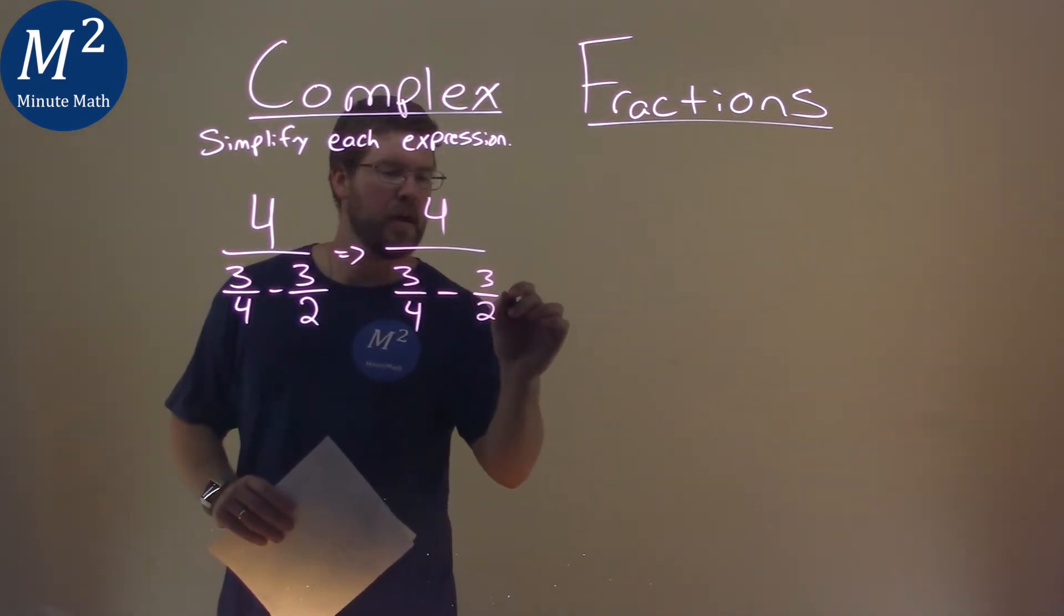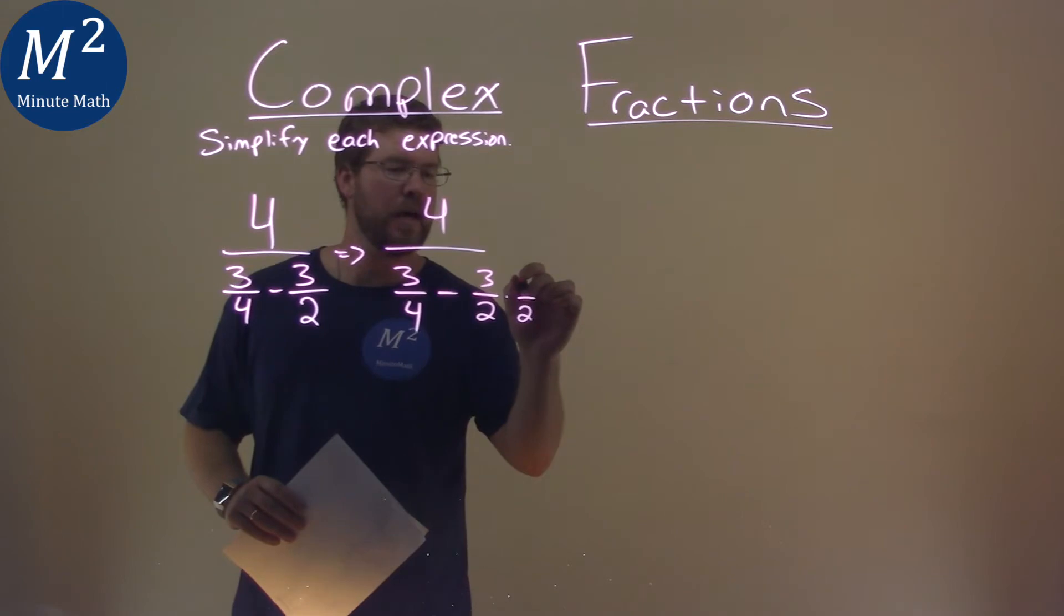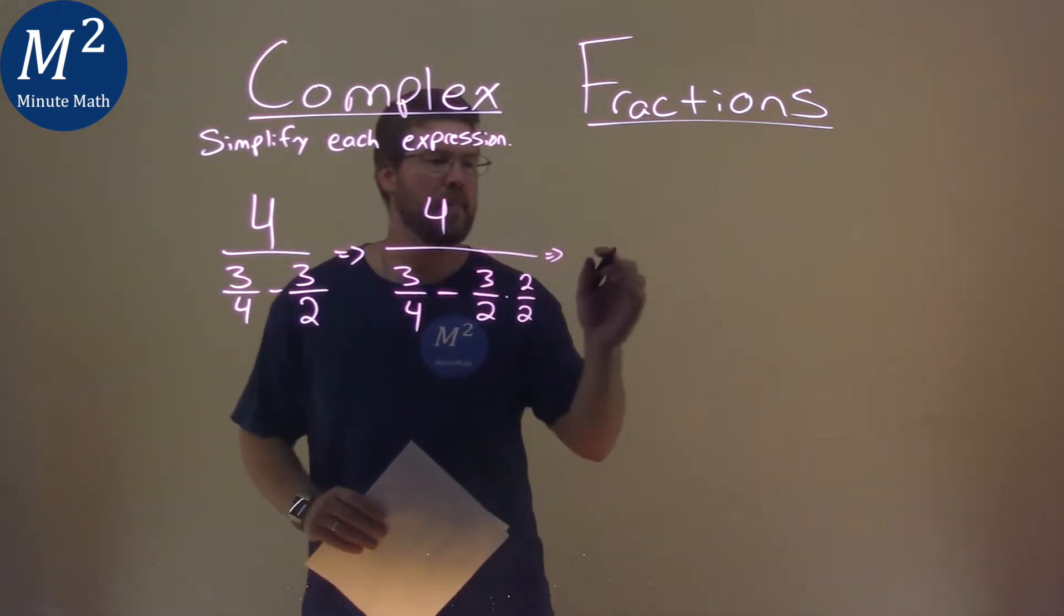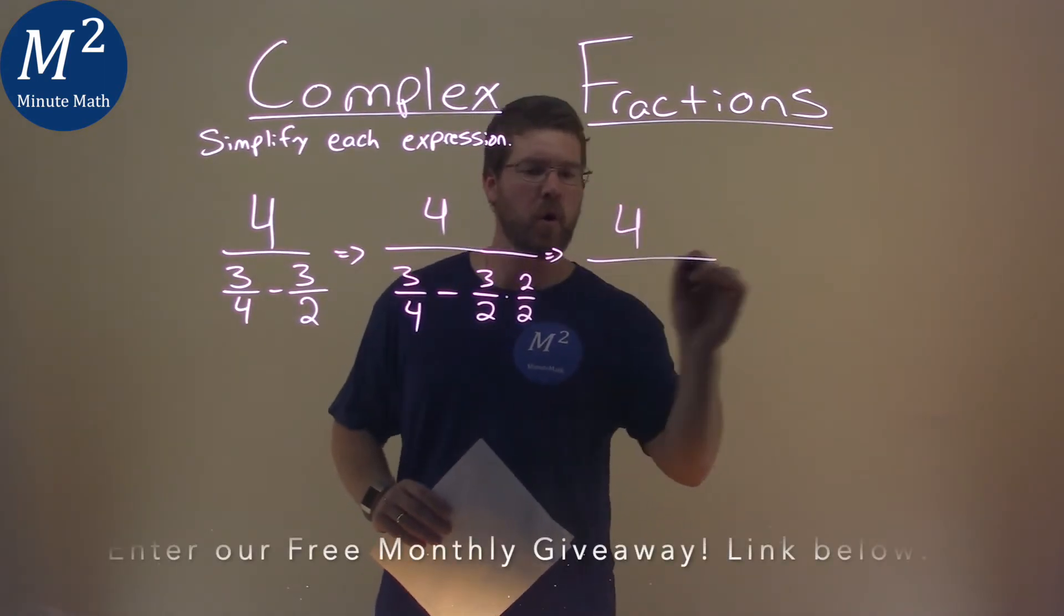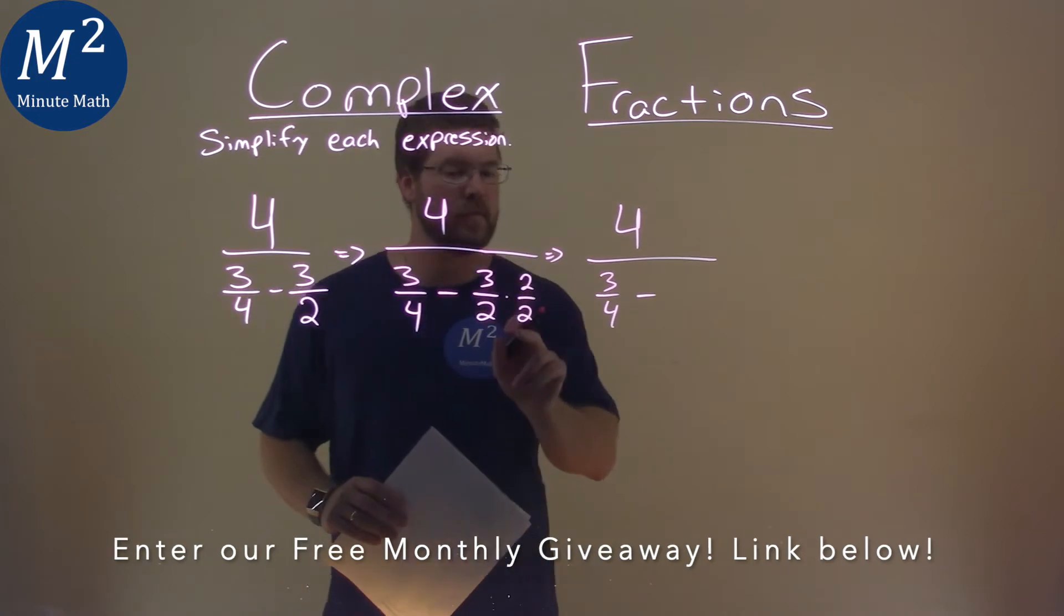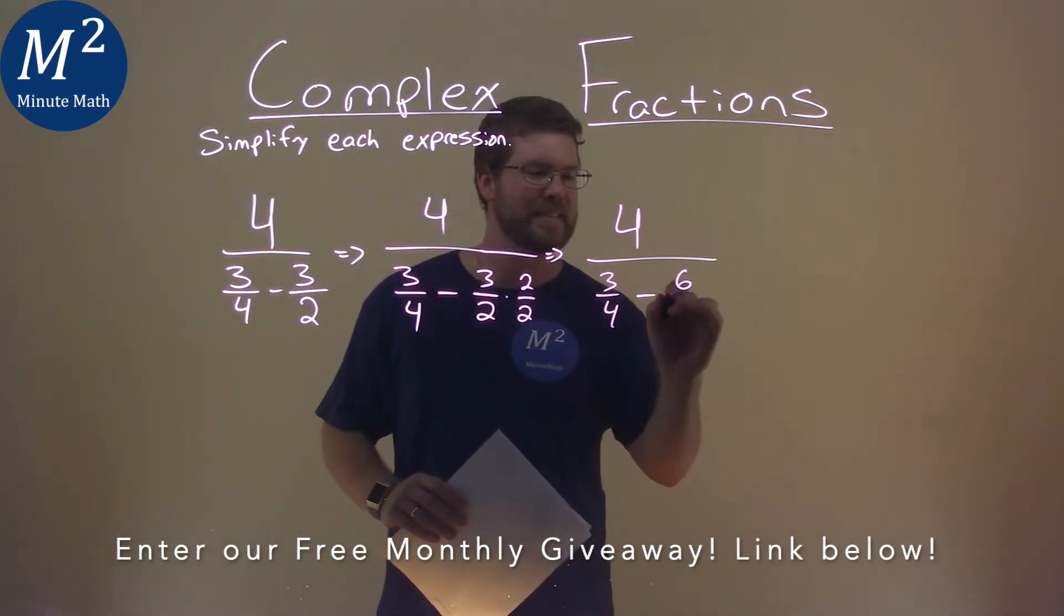So we have 3 halves here, multiply that by a 2, and put the numerator to be 2 as well. It doesn't change it. What does this become? Well, we have 4 over now 3 fourths minus 3 halves times 2 halves becomes a 6 fourths.